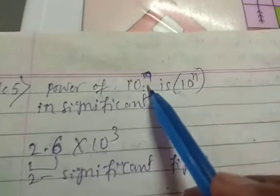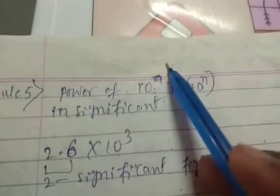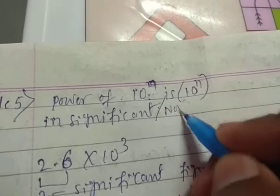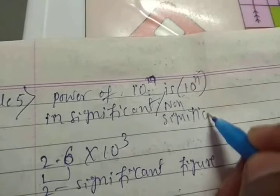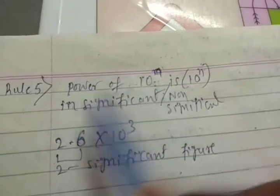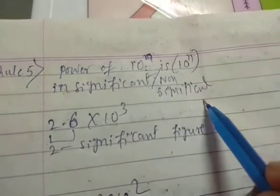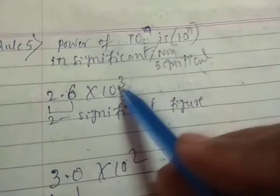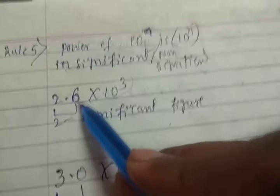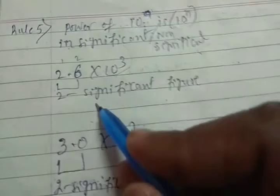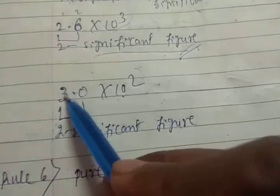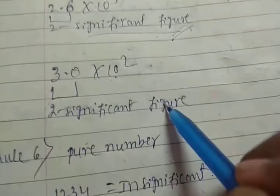Rule five: the power of 10, such as 10², 10³, 10⁴, or 10⁵, is non-significant. For example, 2.6 × 10³ — the 10³ is non-significant, so we consider only 2 and 6, giving 2 significant figures. Another example: 3.0 × 10² — 10² is non-significant, and 3.0 has a zero after the decimal point, so it counts. That gives 2 significant figures.